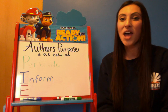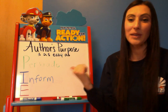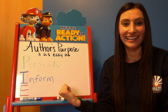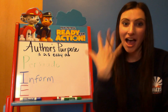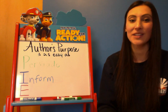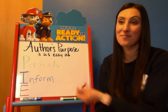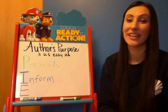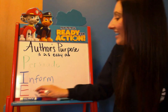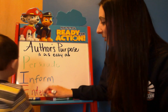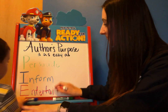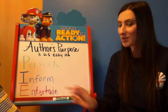So to recap: P is persuade, I is inform. Now let's talk about E. You guys are always good at E — E is entertain.